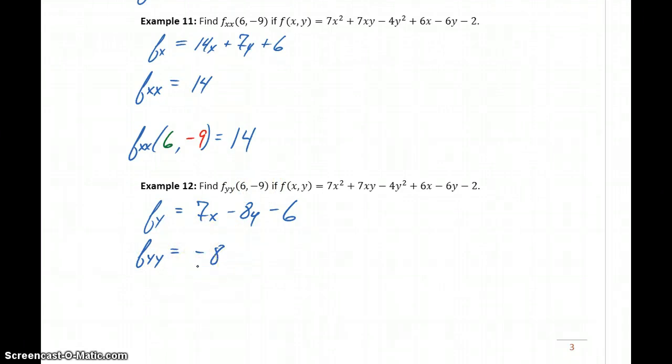Notice we get two different values depending on which variables we differentiate with respect to. Differentiating with respect to x and then x gave us a rate of change of 14. Differentiating with respect to y and then y gives us a rate of change of -8. When we deal with these partial derivatives, make sure you're always paying attention to the order for those partial derivatives, because we end up with different results, and also paying attention to which variable you should be differentiating with respect to at each step.